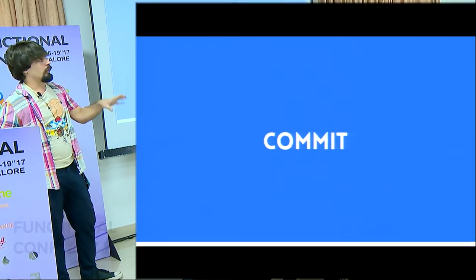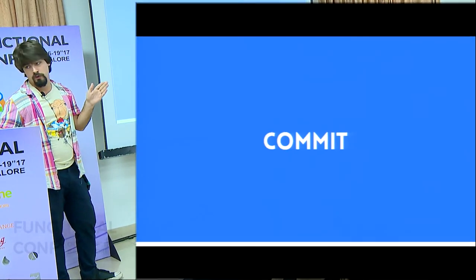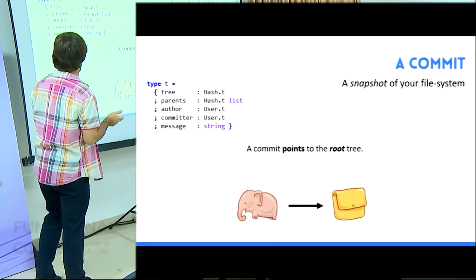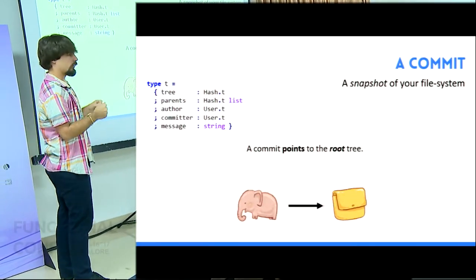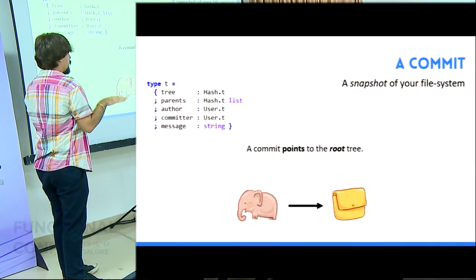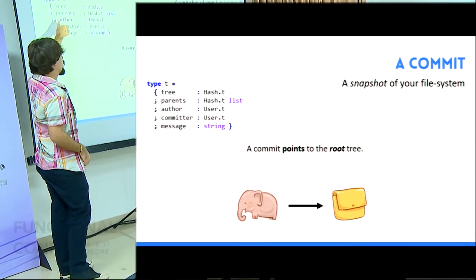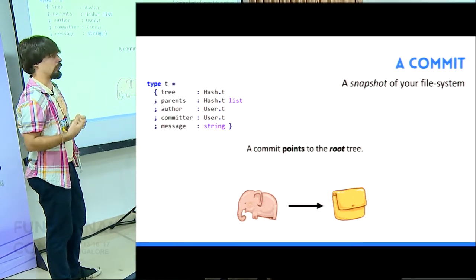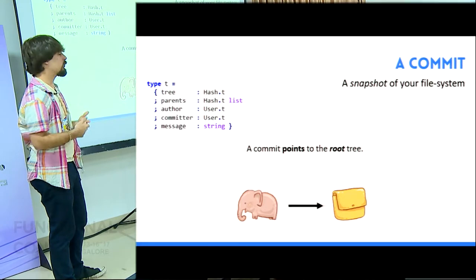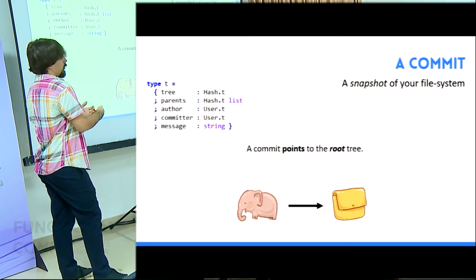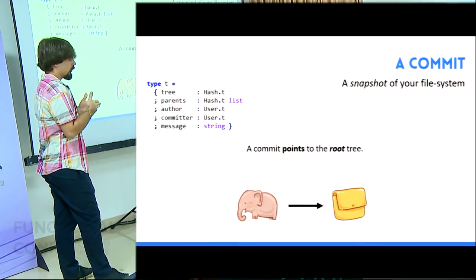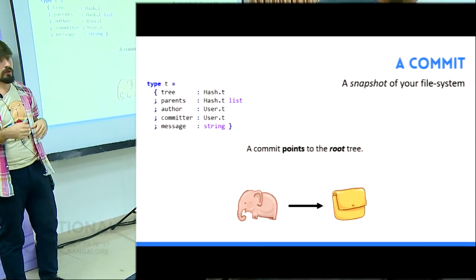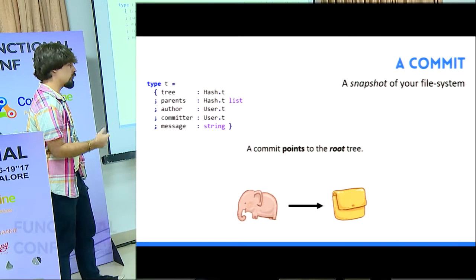The commit is like saving one snapshot of your file system. A commit is really simple: we have the tree root — the root of your repository — after we have the parents, which is where this commit comes from, so it comes from some other commits. The common case is that it comes from one commit, but when you merge, it comes from two commits. And after we have the author, the committer, and the message in the commit.